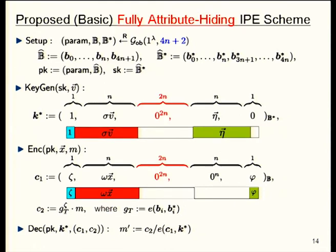Our proposed scheme has a very similar description to the previous one. The only change is that the hidden subspace is enlarged to 2N dimensions. So the description is very similar, but the security proof is very different.